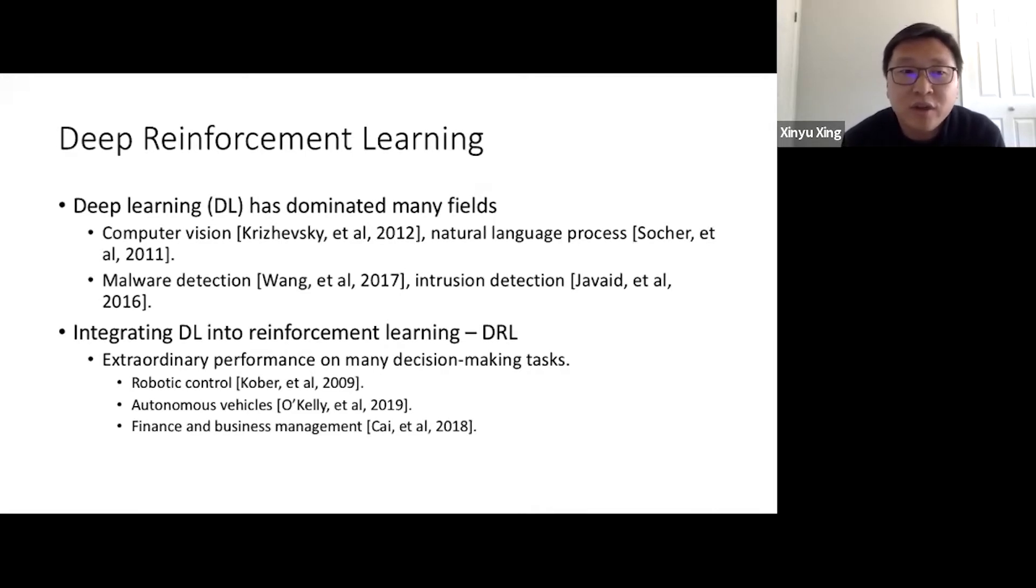Recently, we've seen the trend of integrating deep neural networks into reinforcement learning. The reinforcement learning integrated with deep learning is called deep reinforcement learning. It demonstrates extraordinary performance in many decision-making tasks, such as robotic control, autonomous vehicles, and finance and business management.